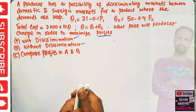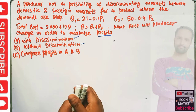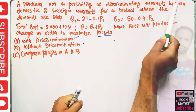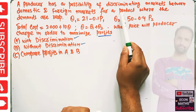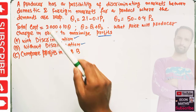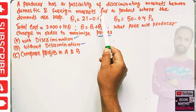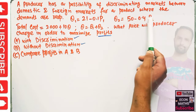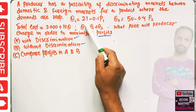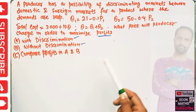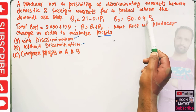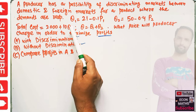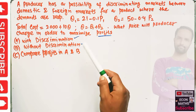In this video we will solve a problem on price discrimination. A producer has a possibility of discriminating between domestic and foreign markets for a product where the demands are respectively: domestic market demand Q1 = 21 - 0.1P1, foreign market demand Q2 = 50 - 0.4P2. Total cost is 2000 + 10Q, where Q = Q1 + Q2.